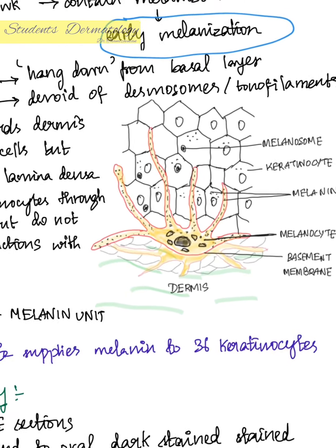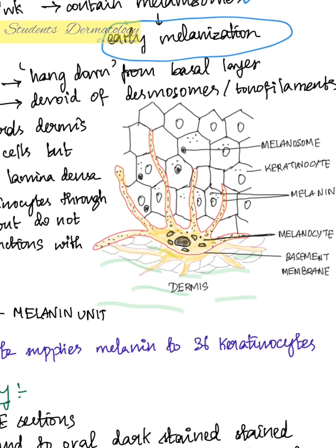These melanocytes hang down from the basal keratinocyte and slightly extend into the dermis, but they never extend beyond the level of the lamina densa — they always remain above it. Also, the melanocyte processes extend in between the keratinocytes but never form intercellular or any other junctions or adhesions with the keratinocytes.